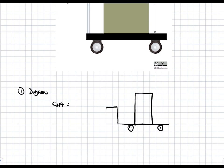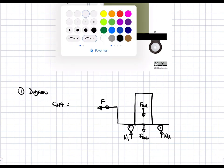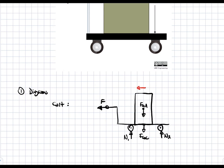The forces on this free body diagram are as follows. We have a force pulling the cart in that direction, a force due to gravity F_g of A (the force of gravity due to the luggage), a force of gravity due to the cart F_g of the cart, and then we have two normal forces N1 and N2. Lastly we have an acceleration of the cart and the block, which we'll call A.